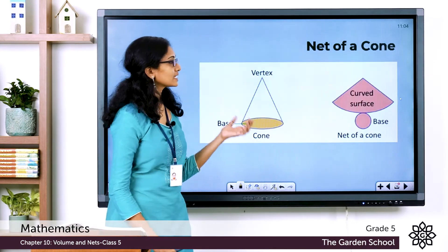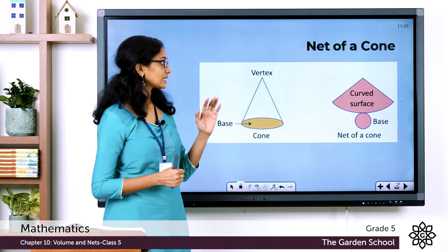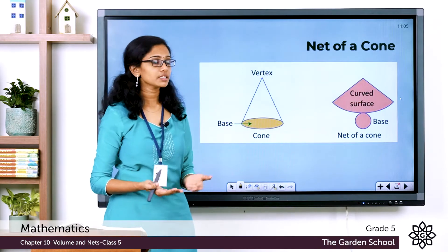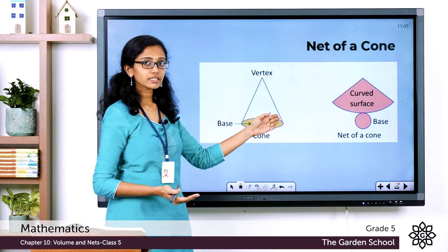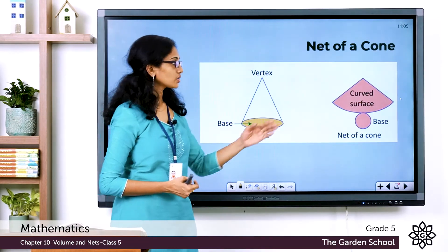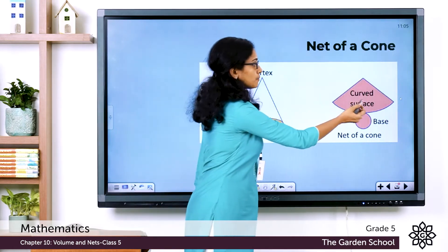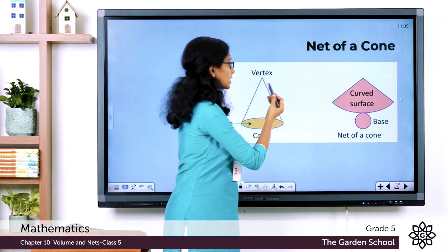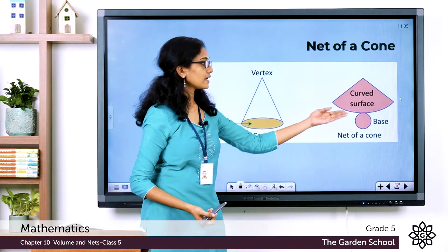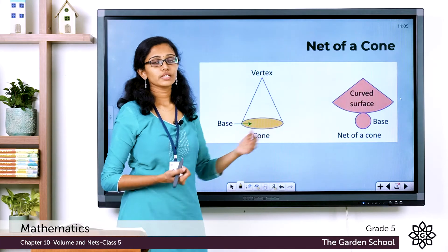Now we will see the net of a cone. A cone is a solid shape which has got a curved face as well as a flat face. If you cut this cone along the curved face and also cut the flat face along the curved edge, you'll get a net of a cone like this one. This part represents the curved face and this part represents the flat base of the cone. This is what the net of a cone usually looks like.